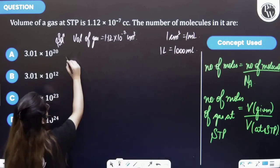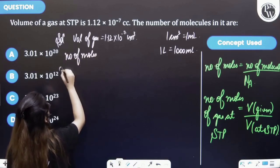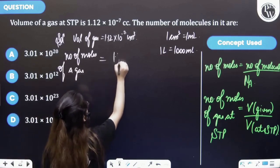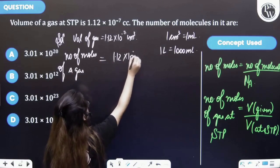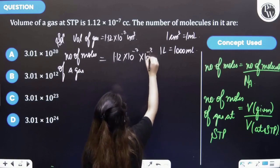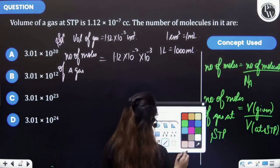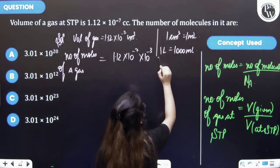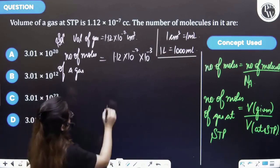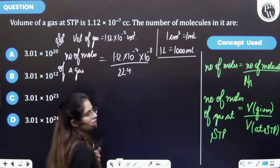So the number of moles of gas will be 1.12 into 10 raised to the power minus 7 into 10 raised to the power minus 3, and volume at STP is 22.4 liters.